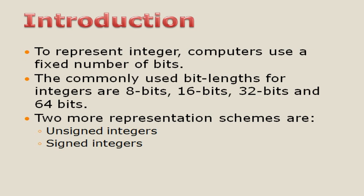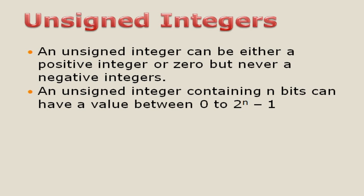Other than that, you have two more representation schemes: unsigned integers and signed integers. Unsigned integers means only positive values — if you do not have any sign, that is no minus sign, you will have only positive values. Signed integers means you will have both negative values and positive values — that is, the sign will be there. The first one is unsigned integers: an unsigned integer can be either a positive integer or zero, but never a negative integer. So if you are given an integer and it does not have a minus sign, then it is called an unsigned integer.